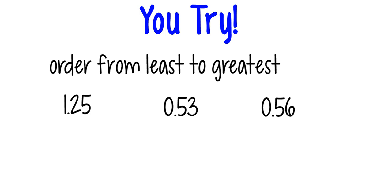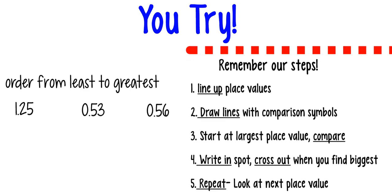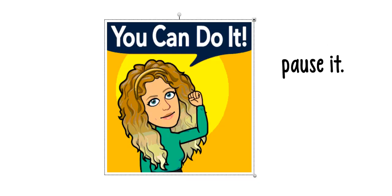Now it's your turn. Can you order these decimals from least to greatest: one and twenty-five hundredths, fifty-three hundredths, and fifty-six hundredths? Remember the steps: line up your place values, draw your lines with comparison symbols, start at the largest place value, cover others with your hand, compare one place value at a time, write in what's different, cross it out, and repeat. Pause the video and try it.